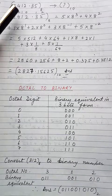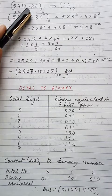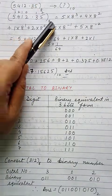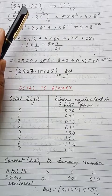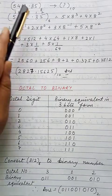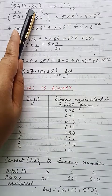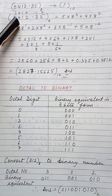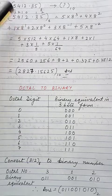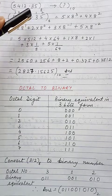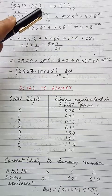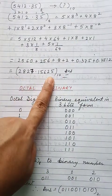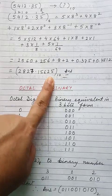Here is another example with a fractional part. 5412.35 base 8 is to be converted into its decimal equivalent. Before the decimal point we write position values starting from right: 0, 1, 2, 3. After the decimal point we start with -1 and -2. The expression is: 5 × 8³ + 4 × 8² + 1 × 8¹ + 2 × 8⁰ + 3 × 8⁻¹ + 5 × 8⁻². When we calculate all this we get the answer 2817.640625 base 10 — the decimal equivalent of this octal number.